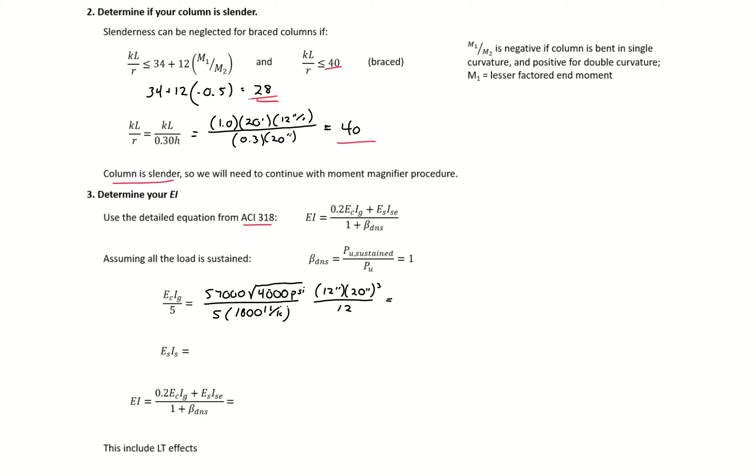Our E_s*I_s component is just 29,000 times our I_s, which is the A*d squared component from our parallel axis theorem.